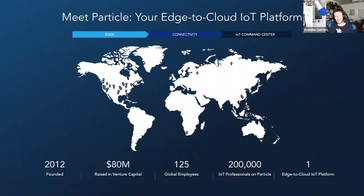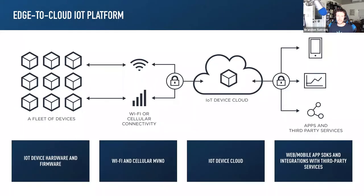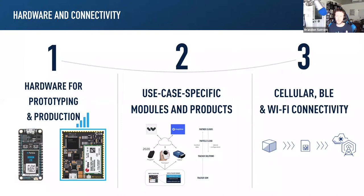As of 2020, Particle is serving over 200,000 customers on our complete IoT platform. We were founded just over eight years ago and have grown into what we refer to as this edge-to-cloud platform. We call it edge-to-cloud because it spans the entire value chain of an IoT application, from physical hardware connected to sensors and actuators, to connectivity for Wi-Fi and cellular, a secure device cloud, and integrations and SDKs.